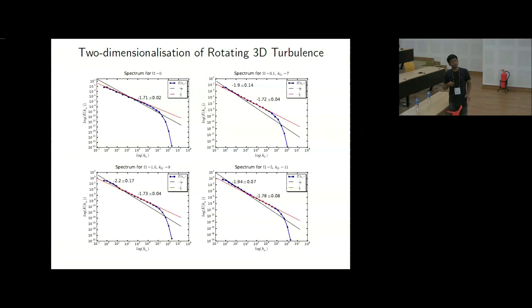Here this shell number is 7. Here shell number is 9 for omega equals 1. For omega equals 5, the shell number is 11. So as the rotation strength is increased, the scaling is changing and the Kolmogorov length scale is shrinking.